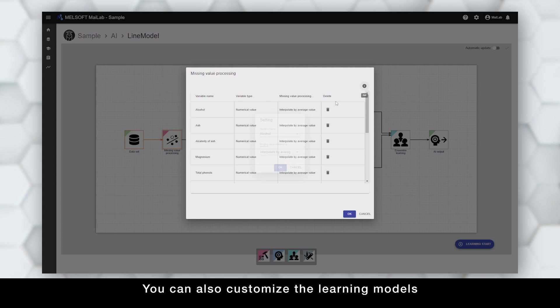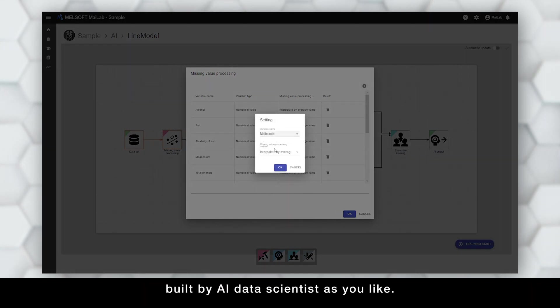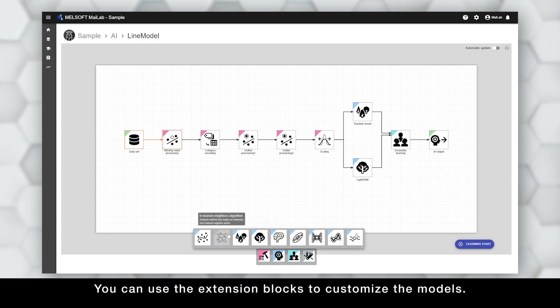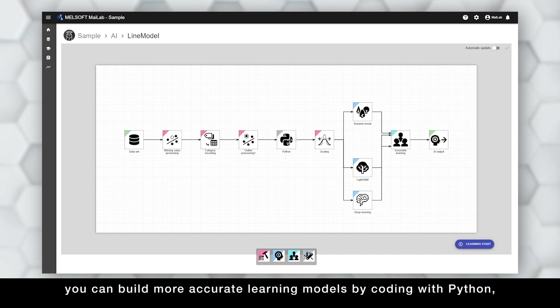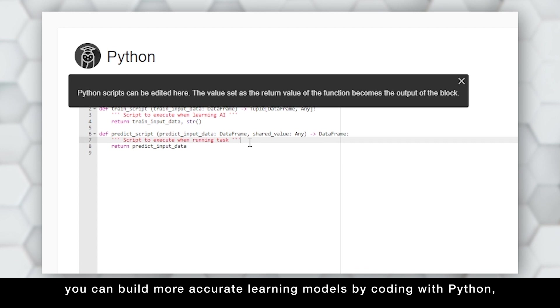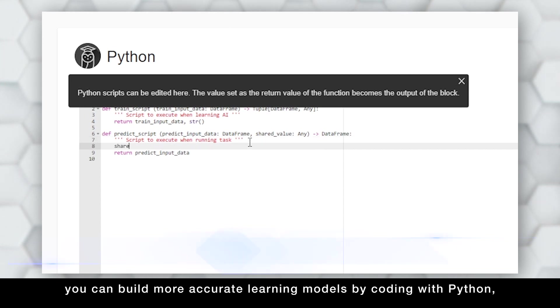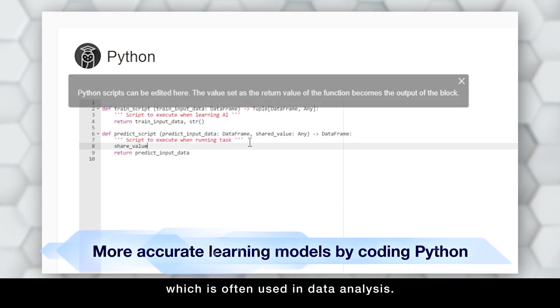You can also customize the learning models built by AI Data Scientist as you like. You can use the extension blocks to customize the models. In addition, if you would like to program by yourself, you can build more accurate learning models by coding with Python, which is often used in data analysis.